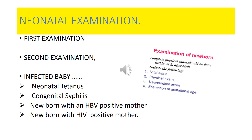Hepatitis B is not a contraindication to breastfeeding. To prevent perinatal transmission, an intramuscular injection of 0.5 ml of hepatitis B immunoglobulin is given along with hepatitis B vaccination within 24 hours of birth. The vaccine is then repeated according to the EPI schedule at the 6th, 10th, and 14th week of age.